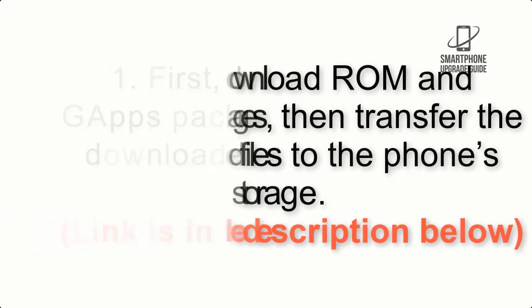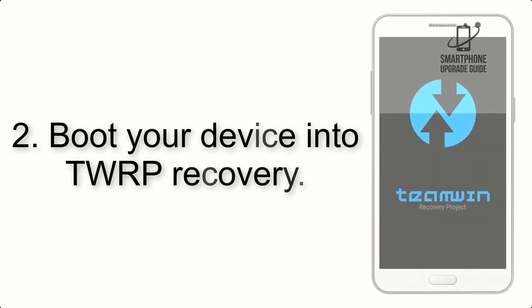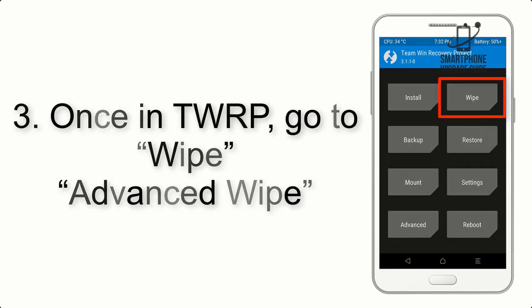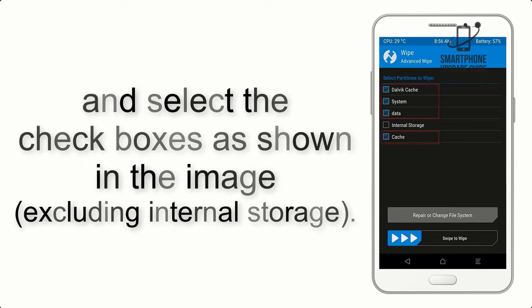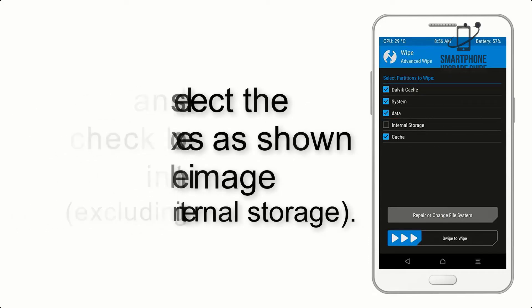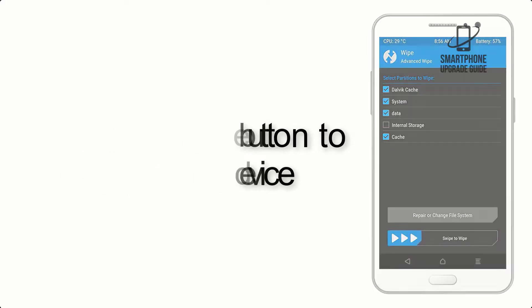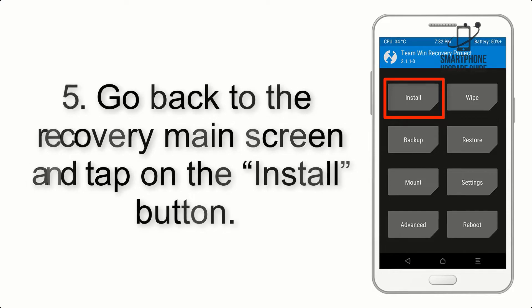Step 2: Boot your device into TWRP recovery. Once in TWRP, click on Wipe, then Advanced Wipe, and select the checkboxes as shown in the image, excluding internal storage. Step 4: Swipe the button to wipe the device. Step 5: Go back to the recovery main screen and tap on the Install button.